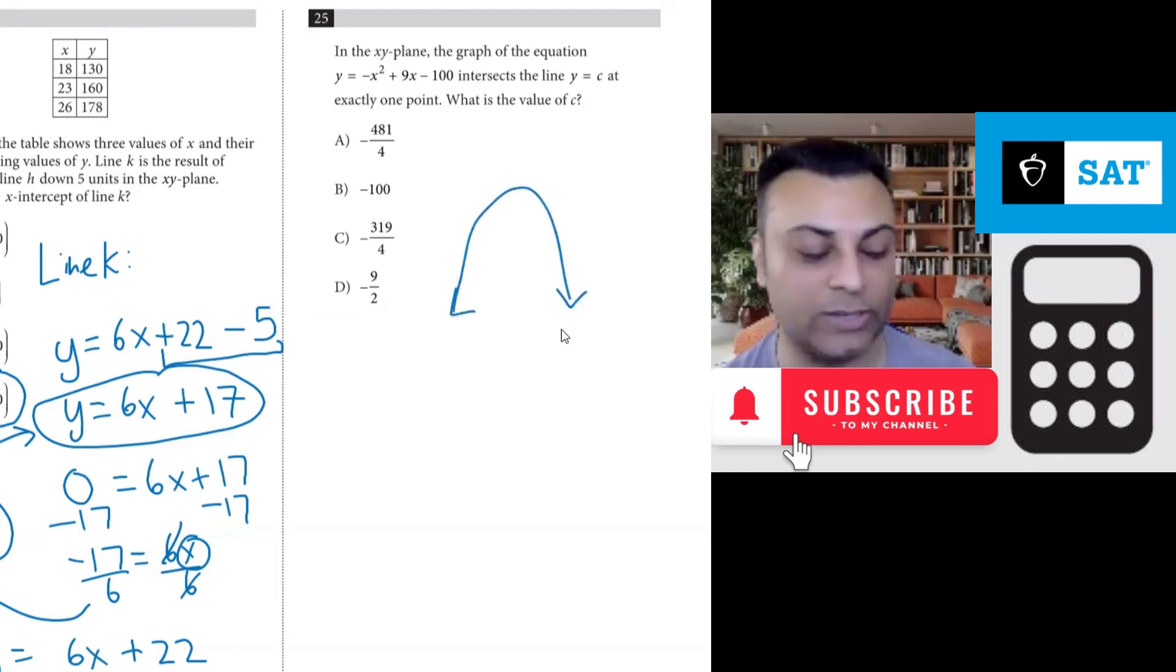It will look like this. Now whatever c happens to be, now they give us a hint it's a negative number, but let's say I did not know that. Let me just draw a rough sketch of what the question is even asking.